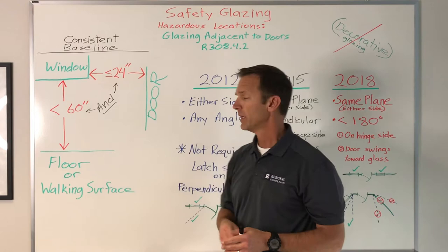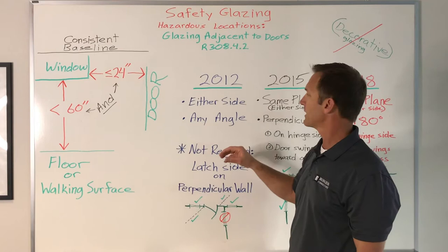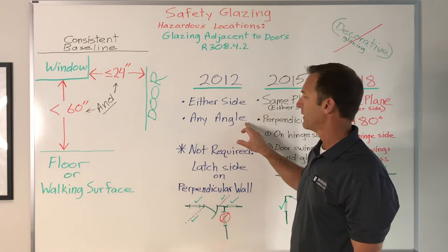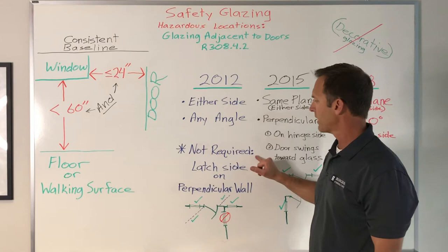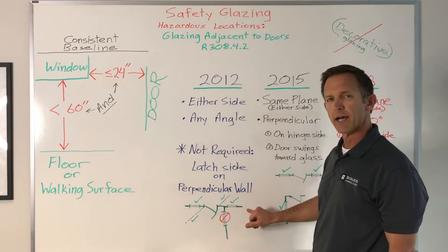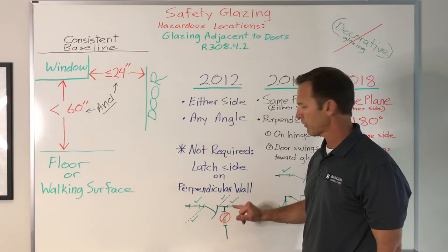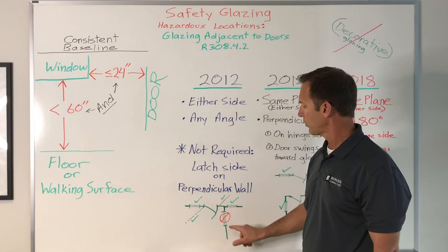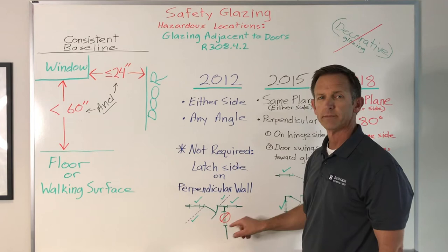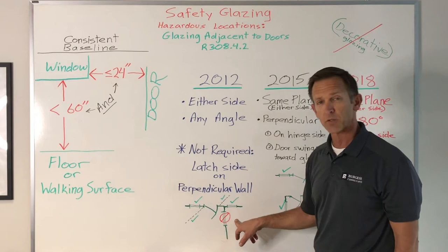Let's look at the history to understand where we came from. In the 2012 code, it was pretty open-ended: if glazing was on either side of the door at any angle, safety glazing was required — tempered glass, a safety bar, etc. The only exception was on the latch side of a perpendicular wall. Looking at the diagram, any window in the plane of the door — shown with green check marks — was required to be addressed as a hazardous location, including any angled wall.